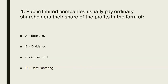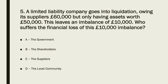The answer to question four is B. A is nonsense, C is nonsense, D is nonsense. Public limited companies usually — though they don't have to — pay ordinary shareholders a share of the profits, and of course that's called dividends.